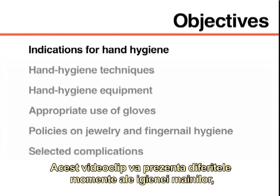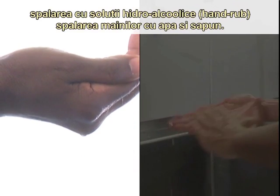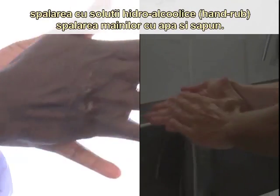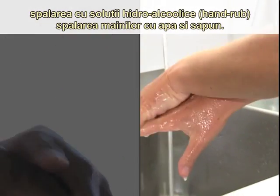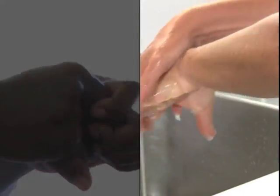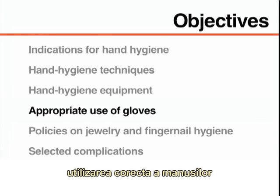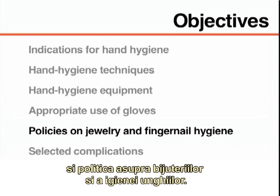This video will demonstrate the various indications to perform hand hygiene as well as two different hand hygiene techniques: hand rubbing with an alcohol-based hand rub formulation and hand washing with soap and water. This video will also review hand hygiene equipment, the appropriate use of gloves, and policies on jewelry and fingernail hygiene.